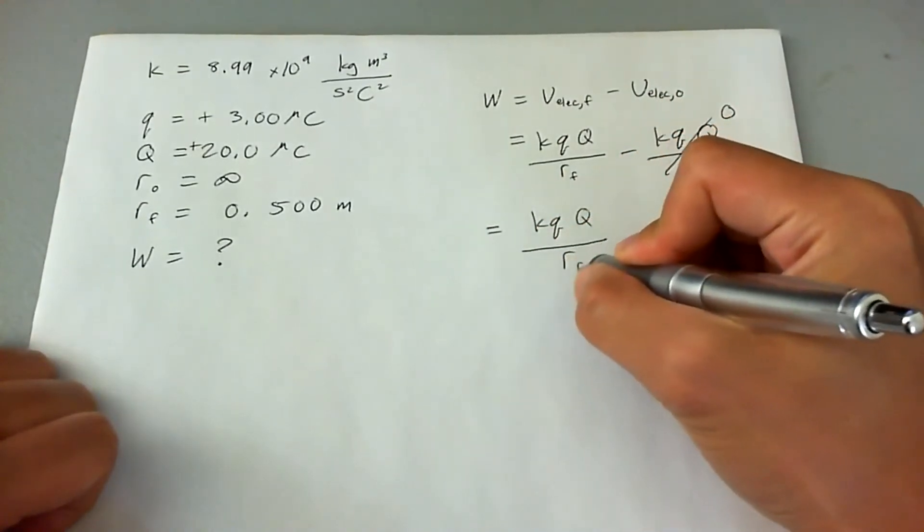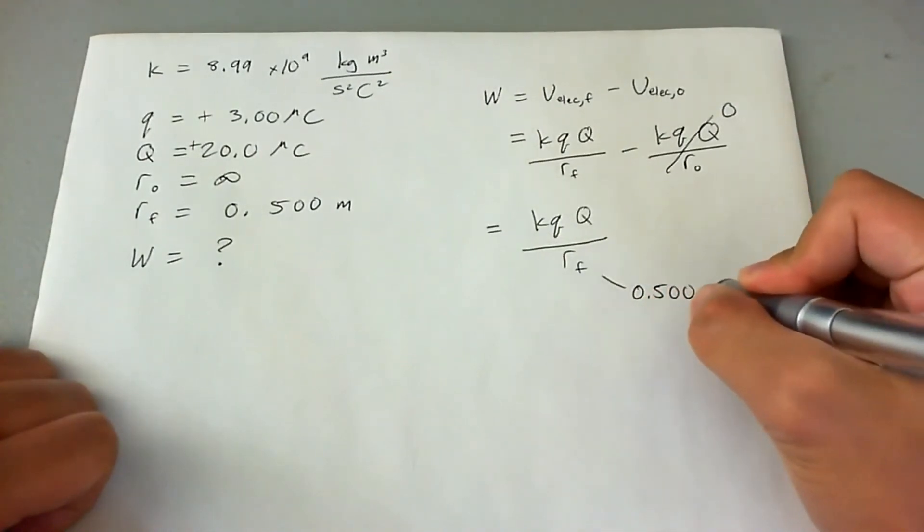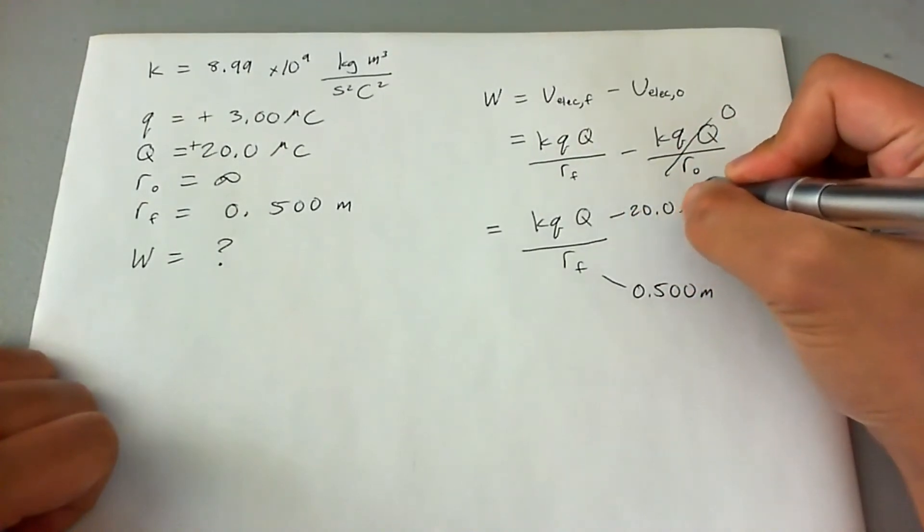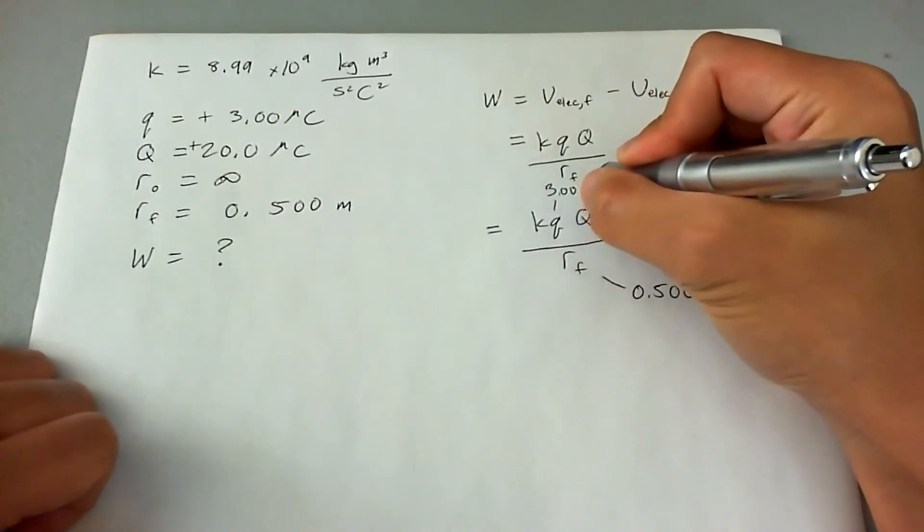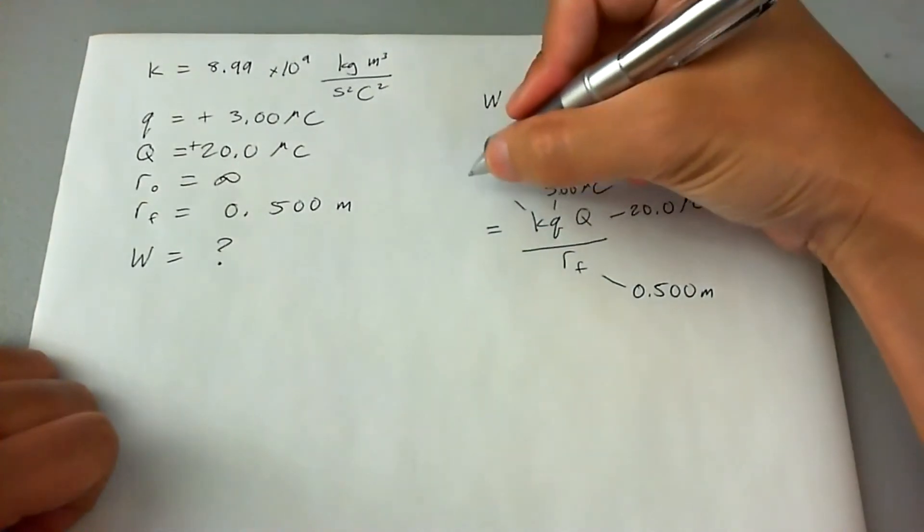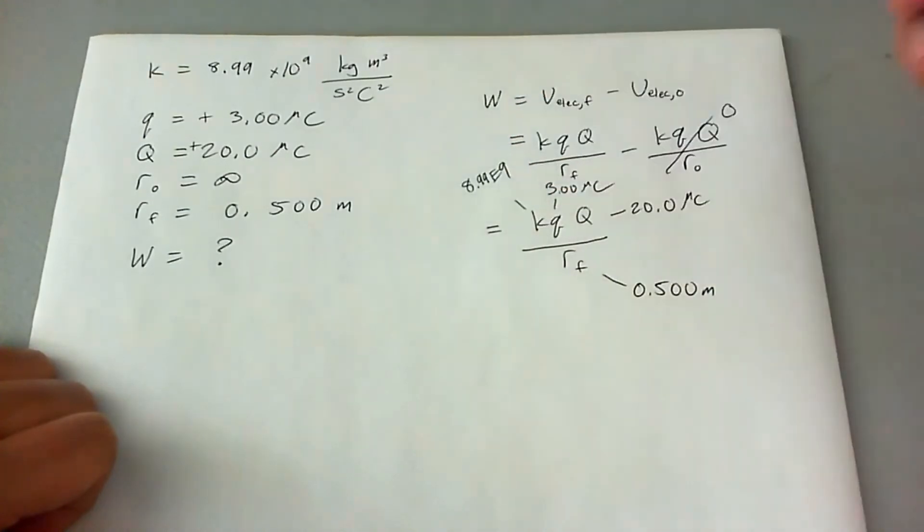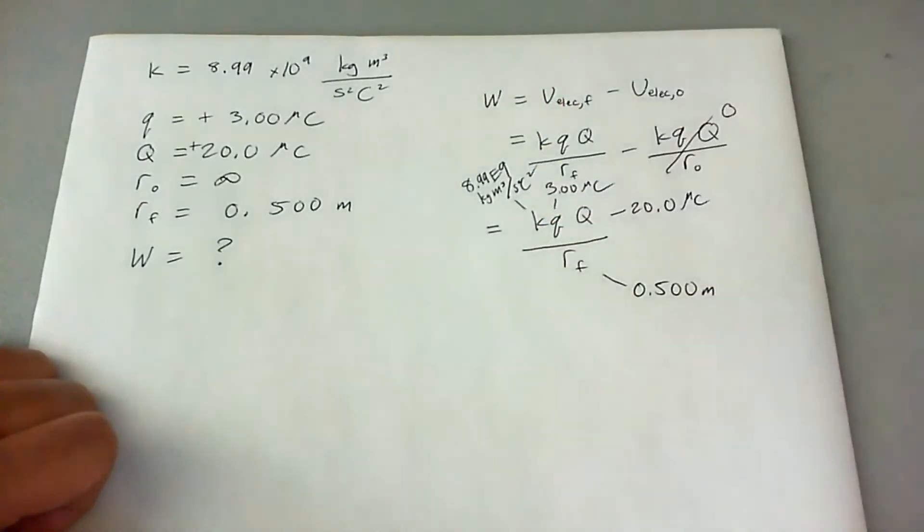And we can fill in all the blanks, plug and chug. This is 0.500 meters. This is 20.0 microcoulombs. This is 3.00 microcoulombs. And this is the large number, 8.99 times 10 to the ninth kilograms meters cubed over seconds squared, coulomb squared.